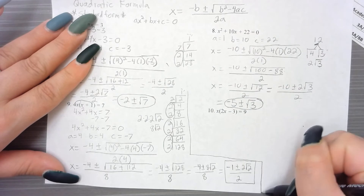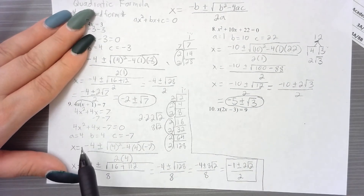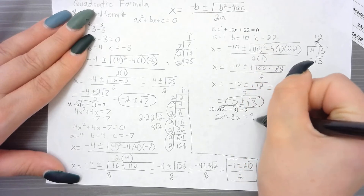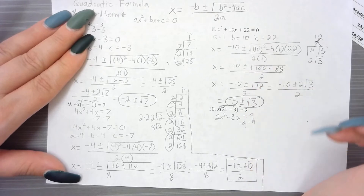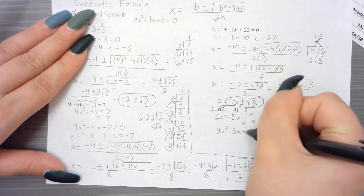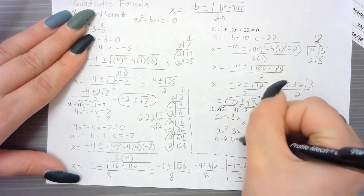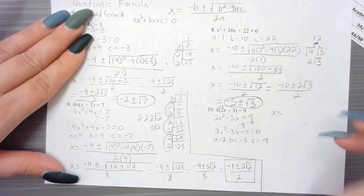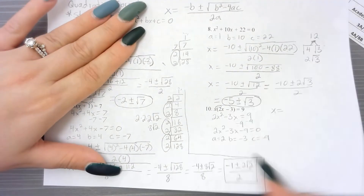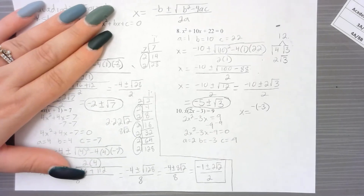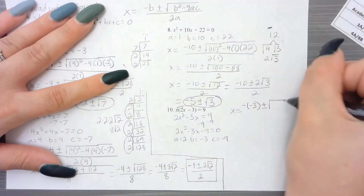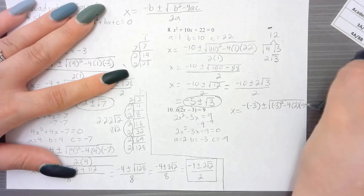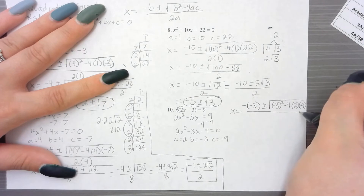For the last one, we again need standard form first. We distribute: x times 2x is 2x squared, x times negative 3 is negative 3x, and that equals 9. Subtracting 9 from both sides gives 2x squared minus 3x minus 9 equals 0. So a is 2, b is negative 3, and c is negative 9. We plug in: x equals negative b — that's negative negative 3 — plus or minus the square root of negative 3 squared minus 4 times 2 times negative 9, all over 2 times 2.